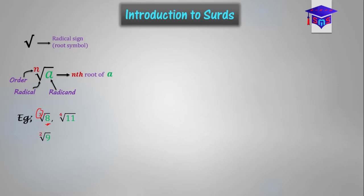Remember this is different from 3 root 8. 3 root 8 is written with the 3 in front of the root sign. And then this one is the 4th root of 11. 4 is the order and the 11 is the radicand. This is also different from 4 root 11. Remember that.